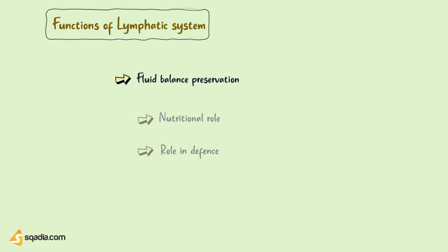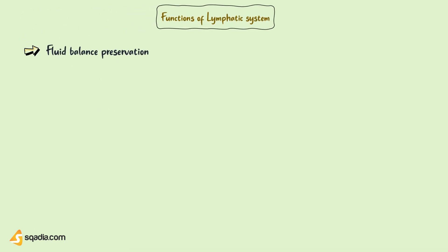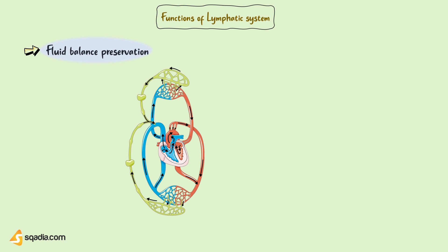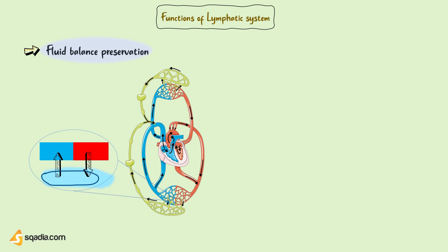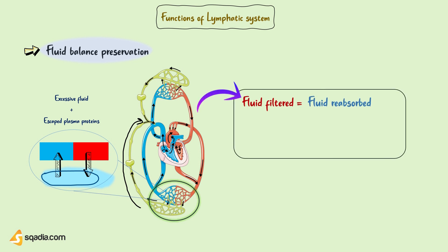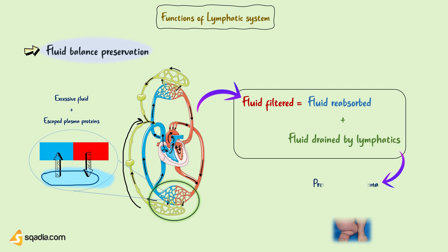For the preservation of fluid balance, lymphatics absorb the excess interstitial fluid that has been filtered by the capillaries at the tissue level — as discussed in detail in previous videos. Lymph vessels absorb this excessive fluid plus escaped plasma proteins, due to increased permeability, and drain it back into the neck vein. In this way, it preserves the balance between fluid filtered from and fluid reabsorbed by the capillaries, thus maintaining tissue volume homeostasis and preventing lymphedema — the accumulation of fluid in extracellular spaces.